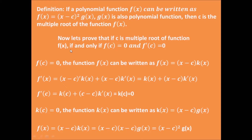Now I just want to prove this statement is equivalent to the original definition. So for the function f, it can be written as (x minus c) times another function k(x). Then we can perform the derivative of f, so we have f prime equals k(x) plus (x minus c) times k(x) prime.